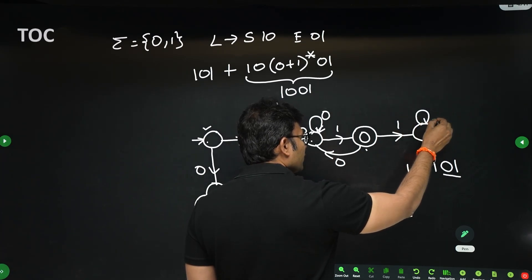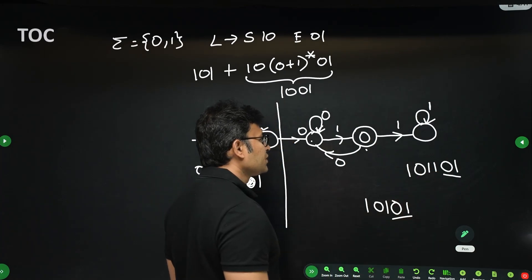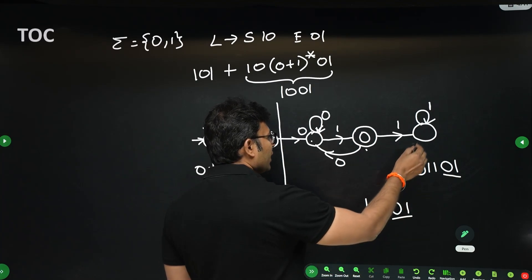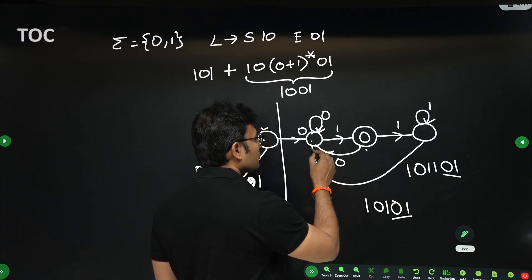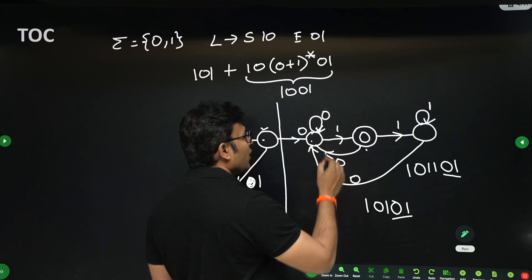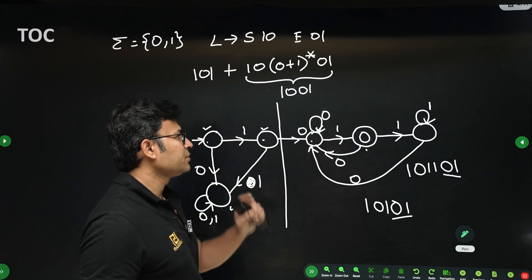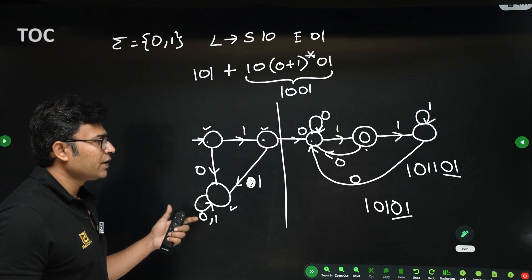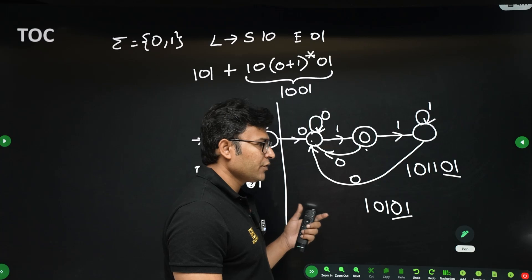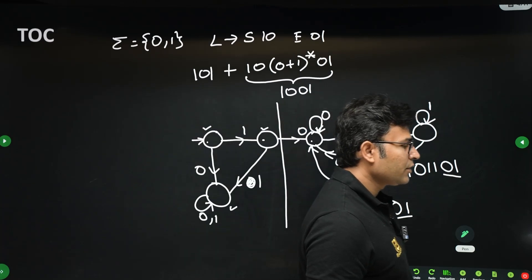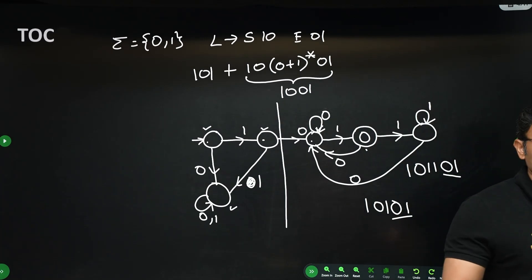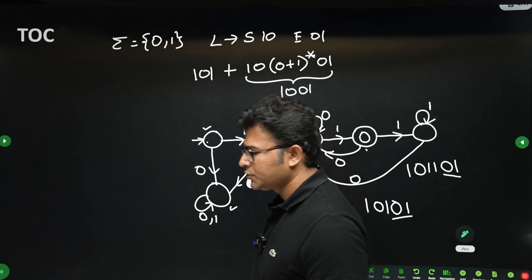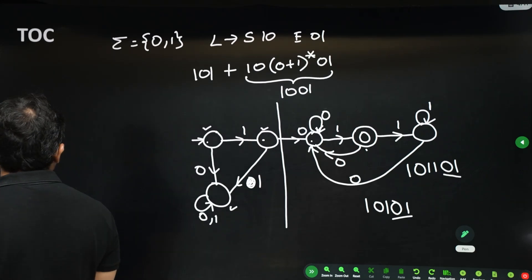If we get a '0' then '1' from that waiting state, we accept it. This is the complete DFA. For all states we have discussed what happens on '0' and on '1'. This is not an easy question — if you are not able to do it the first time, that is fine. With practice you will be able to do it, and we will solve many more difficult questions.